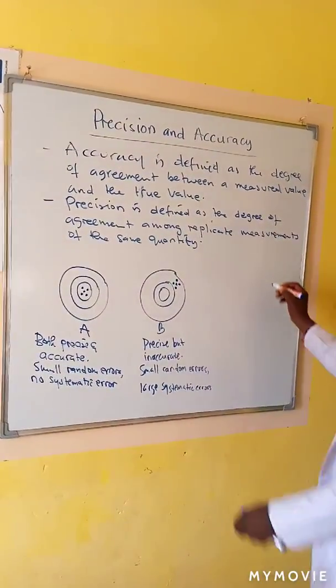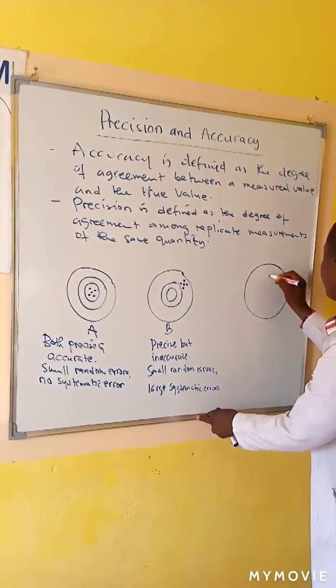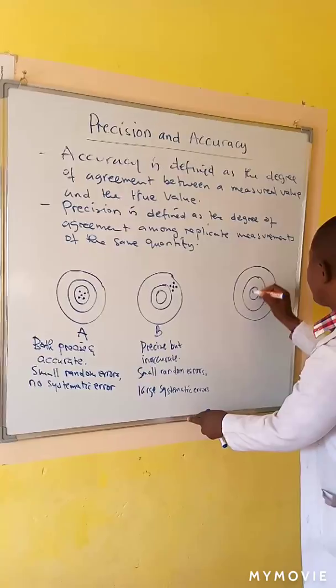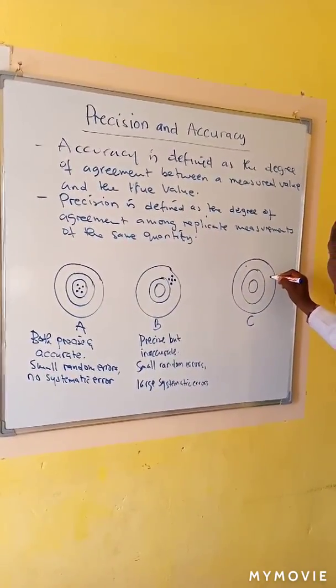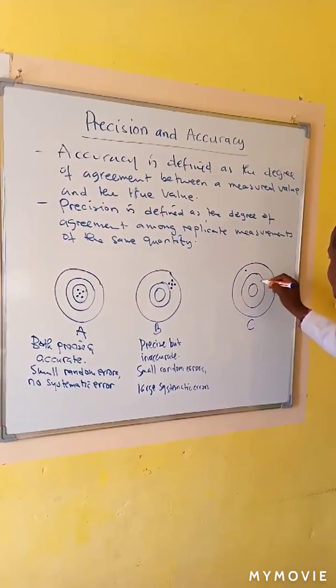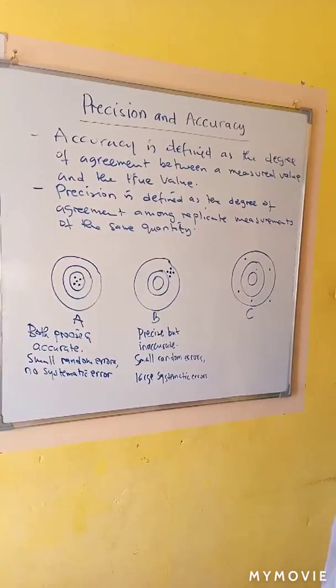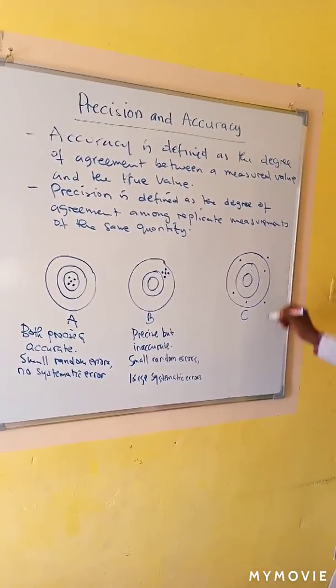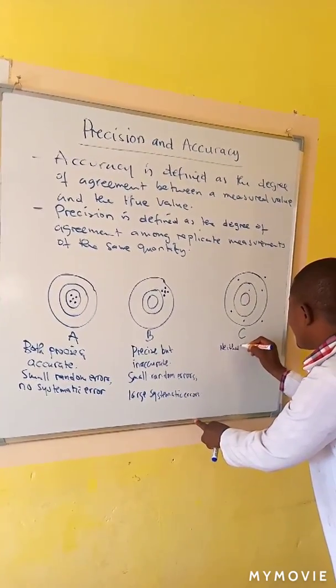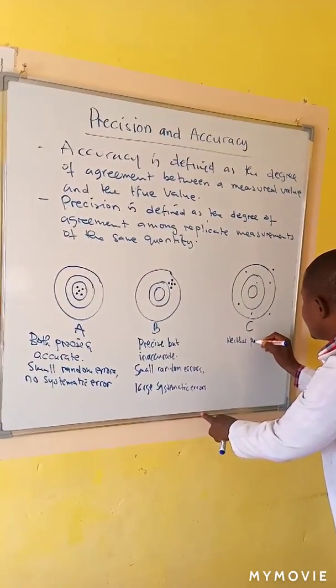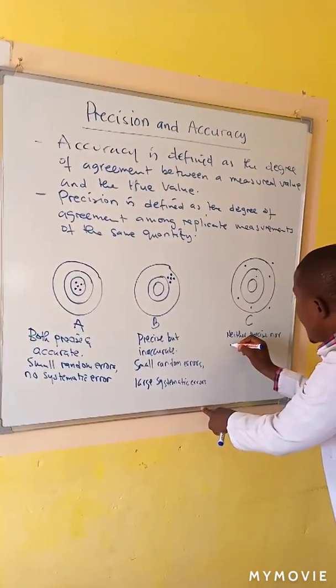In C, you scatter all the bullets or your dart throws are scattered. In this case it means you are neither precise nor accurate.